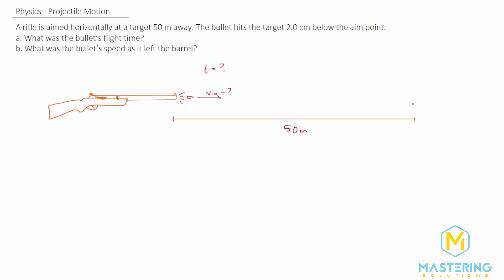From the question, there's one other piece of information we can put in. They tell us they're aiming right here, but it actually hits two centimeters below. So delta y is two centimeters. Where they're aiming is y initial equals zero, and down here is y final. Two centimeters is the same as 2×10⁻² meters, or 0.02 meters — all negative because we're going in the negative y direction.